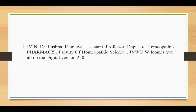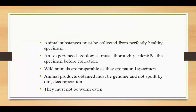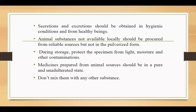We will discuss today about the collection of animal substances. Animal kingdom: general use for collecting drug substances. Animal substance must be collected from perfectly healthy specimens, and experienced geologists must thoroughly identify the specimens during collection. Wild animals are suitable as they are natural specimens. Animal products obtained must be genuine and not spoiled by dirt or decomposition — there must not be worm-eaten. Secretion and excretion should be obtained in hygienic conditions from healthy animals.